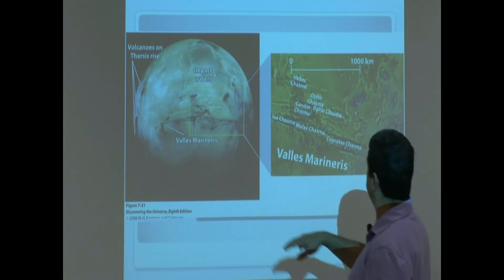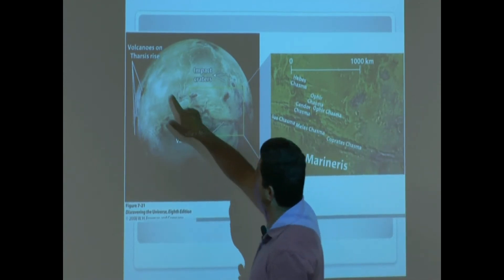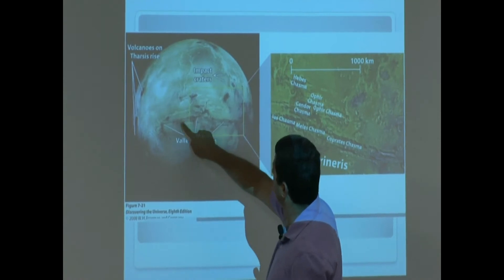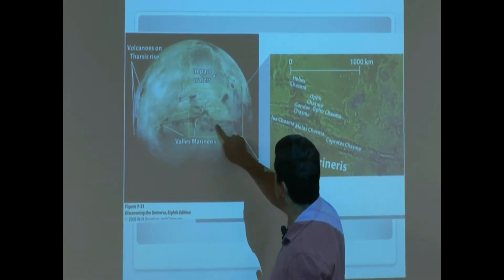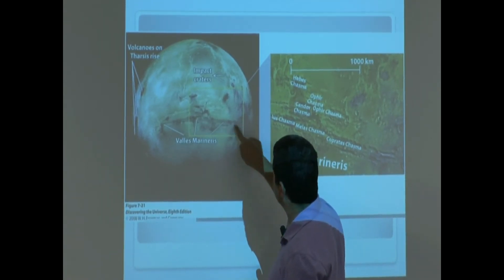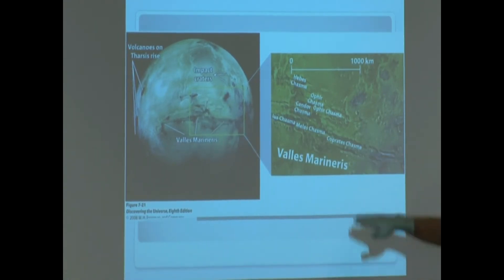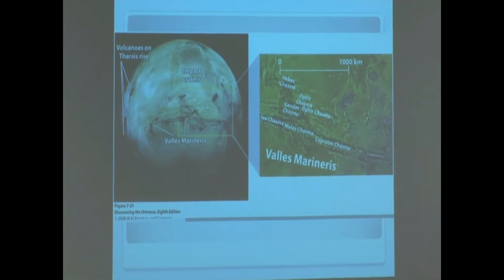Here's another view of that. Volcanoes on the Tharsis region, Olympus Mons, impact craters, Valles Marineris. You see how big that is? Amazing. Huge. Very, very wide and very deep. And then a different view of Valles Marineris.